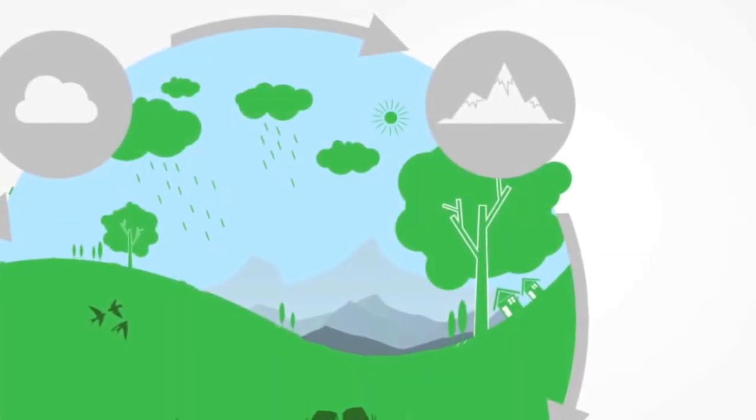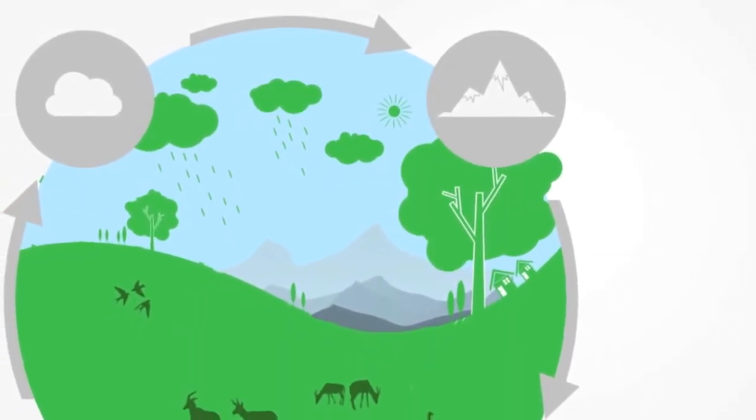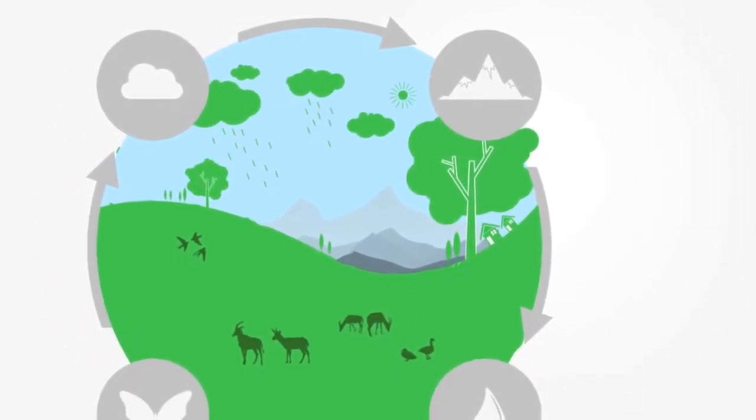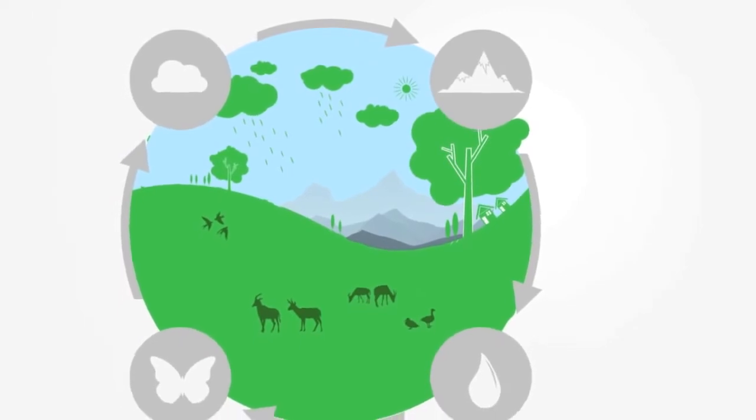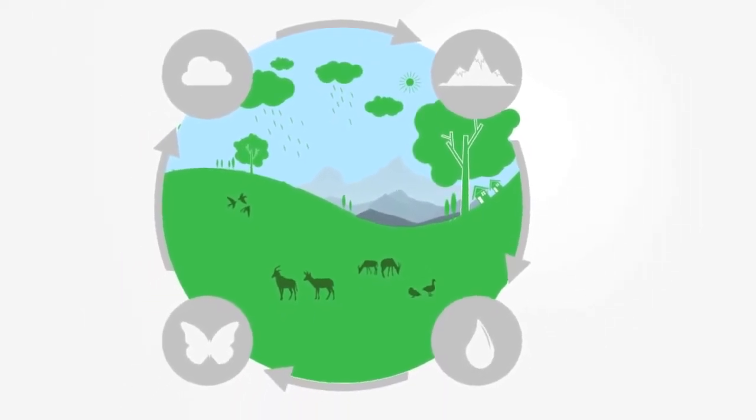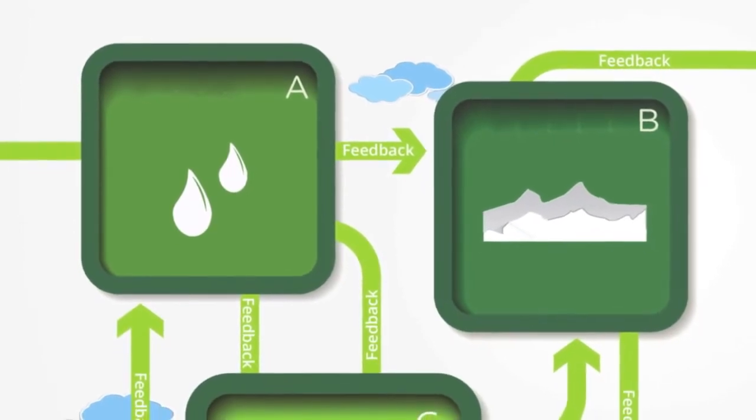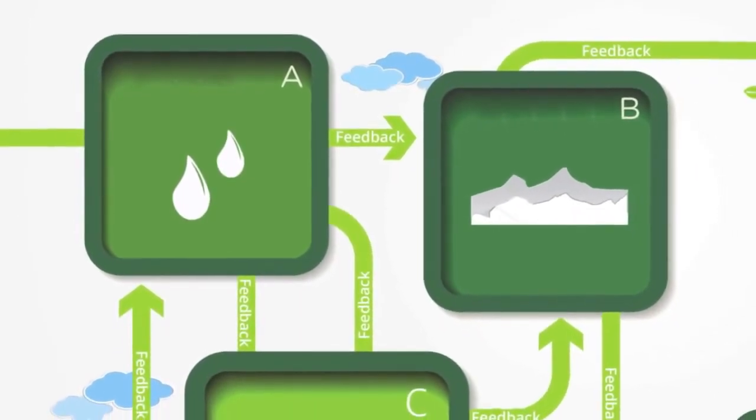These different spheres interact to create a unique state or ecosystem. An ecosystem is the combination of a community of biological organisms and a particular physical environment with which they interact. Thus we can understand an ecosystem as a certain combination or mix of our different spheres and the climate.